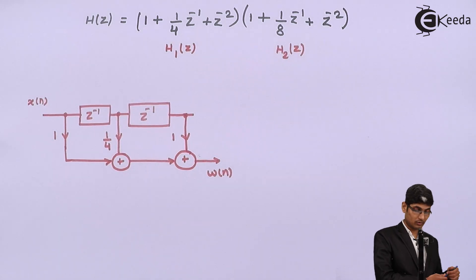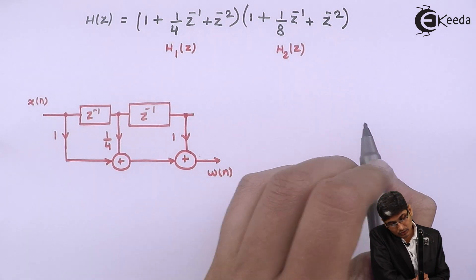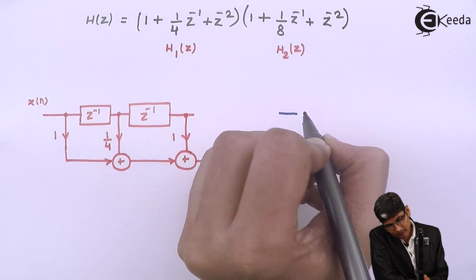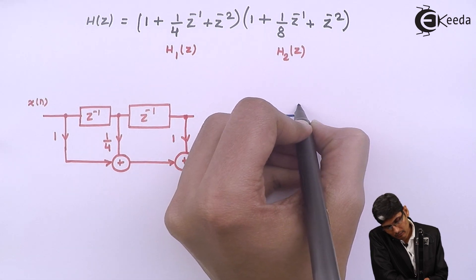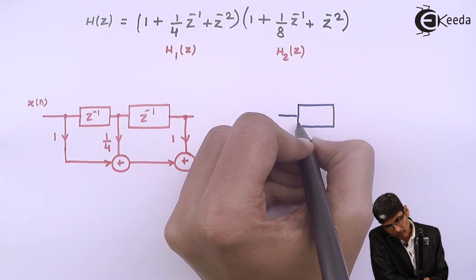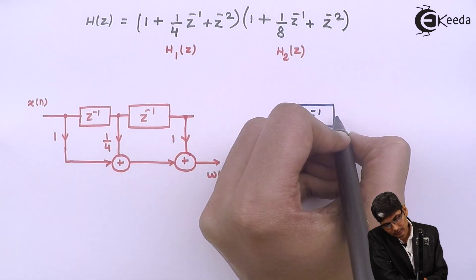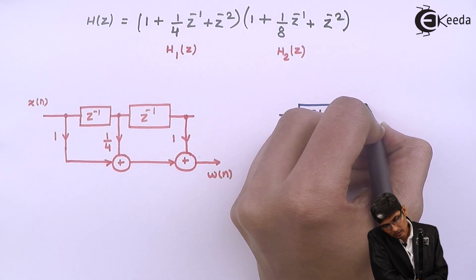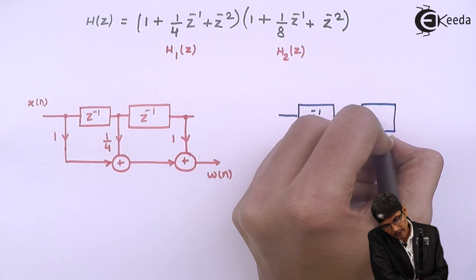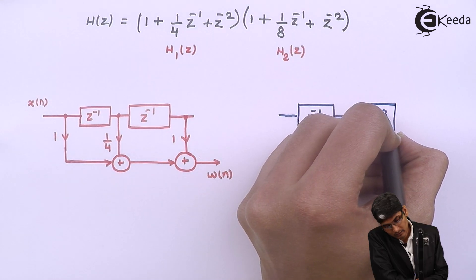Then let us realize H2 of Z. Now H2 of Z again I will have two delay blocks. This is the first delay block and this is a second delay block.